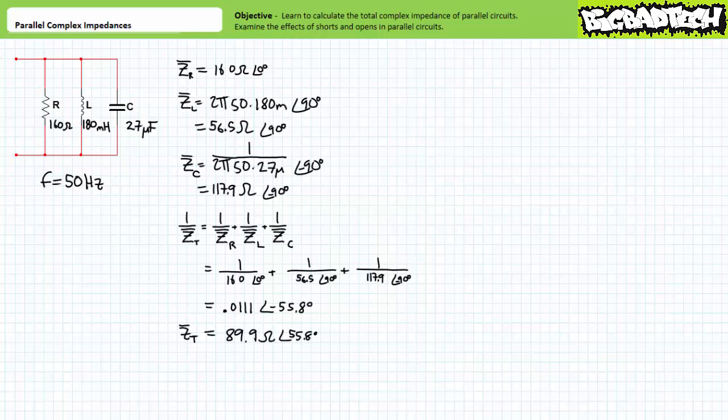When we add one over ZR plus one over ZL plus one over ZC, we arrive at one over ZT being equal to 0.011 at an angle of negative 55.8 degrees. Taking the inverse of one over ZT, we arrive at ZT, the total impedance, being equal to 89.9 ohms at an angle of 55.8 degrees. ZT, the total impedance of this parallel relationship, appears to be primarily inductive given it's in the first quadrant. This is to be expected given the inductor is the element with the smallest magnitude and is the path through which the largest amount of current would flow, though the capacitor in parallel seems to be moderating its influence. This condition, however, is only true at our given excitation frequency of 50 hertz.